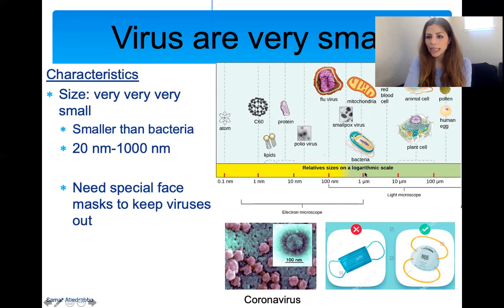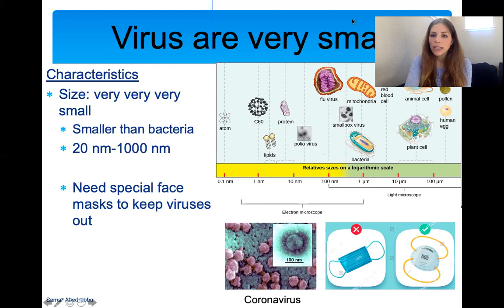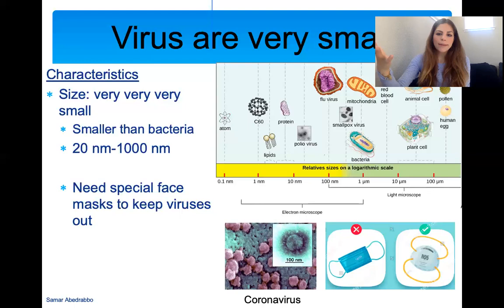To give you some reference: a red blood cell is measured in micrometers, bacteria are typically smaller than a red blood cell, and viruses are a lot smaller than bacteria. This is a logarithmic scale showing from small to big — the smallest is an atom, and then you can see viruses like the polio virus, which causes polio and paralysis, and the flu virus, which is a little bigger. Coronavirus is around 70 to 100 nanometers in size, so it's very, very small.